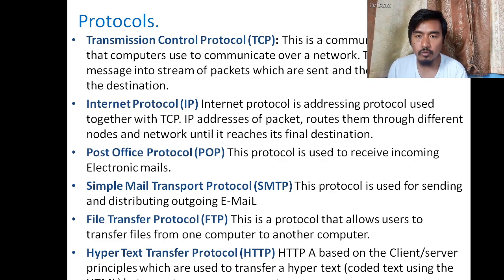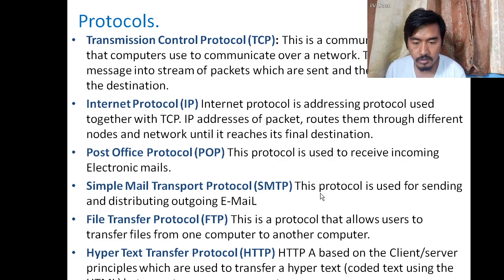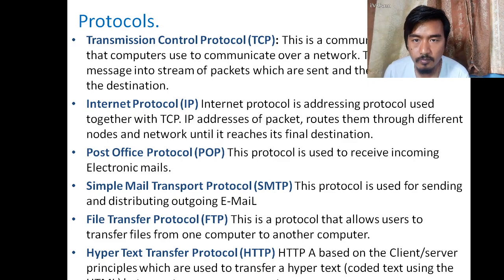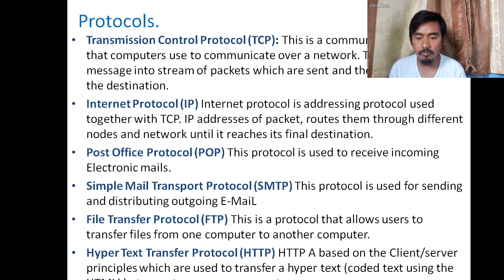POP (Post Office Protocol) is used to receive incoming electronic mail. Without POP protocol, you cannot receive emails. SMTP (Simple Mail Transfer Protocol) is used for sending and distributing outgoing emails — it transfers emails from your computer to other computers, helping to send and receive emails.